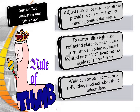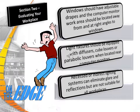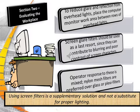Windows should have adjustable drapes, and the computer monitor work area should be located away from and at a right angle to windows. Light fixtures should be equipped with diffusers, cable louvers, and parabolic louvers located near the computer monitor. Recessed or indirect lighting systems eliminate glare and reflections but are not suitable for all workplaces. To reduce glare from overhead lights, place the computer monitor work area between rows of overhead lights. Screen glare filters should be used as a last resort since they contribute to blurring and poor contrast. Nylon mesh filters are preferred over glass or plexi filters, and screen filters are a supplementary solution, not a substitute for proper lighting.